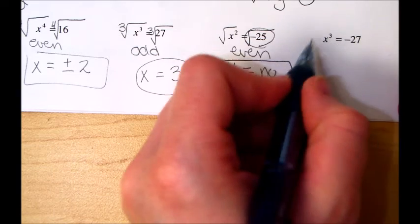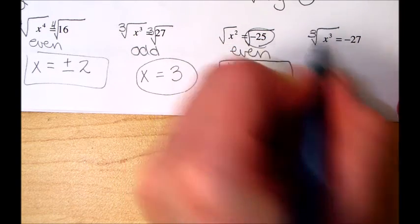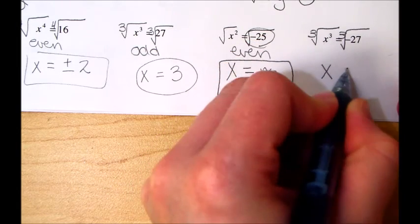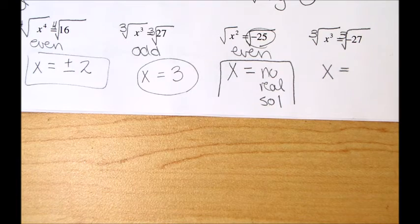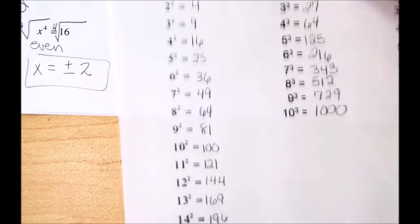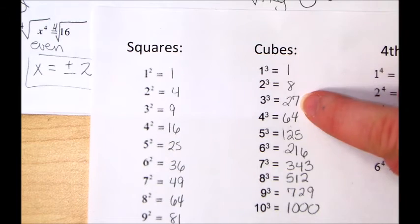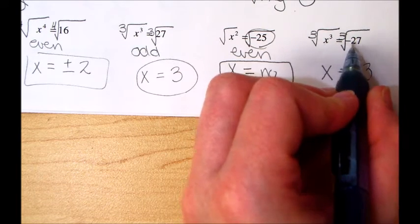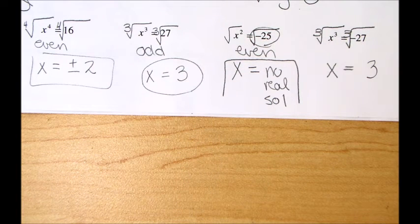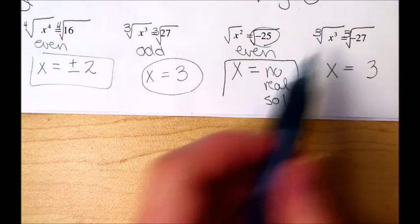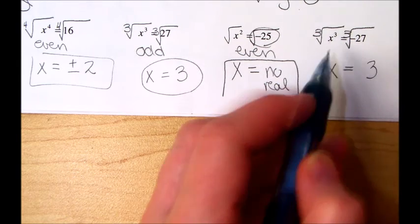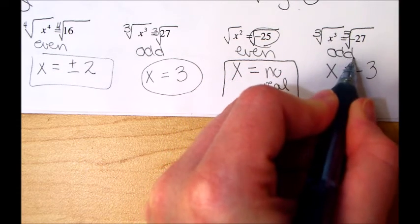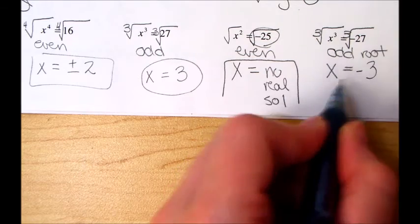Now the cube root, we're going to, or excuse me, the x to the cube, we're going to take the cube root to get x by itself. This becomes x and this becomes, let's take a look at our chart. The cube root of 27 is a 3 because this one was negative. The answer is going to be negative. That is allowed because this is an odd root. So negatives are okay.